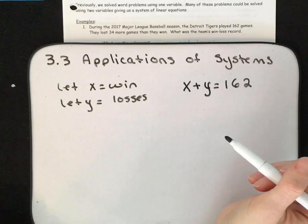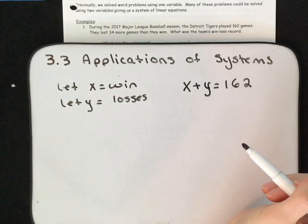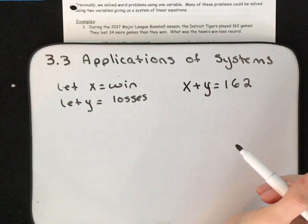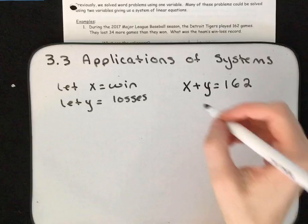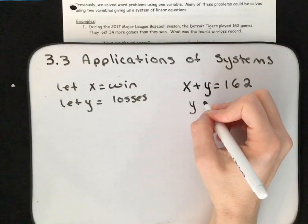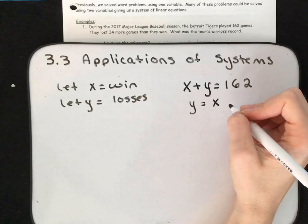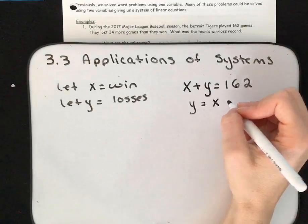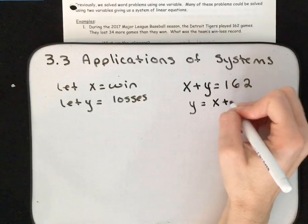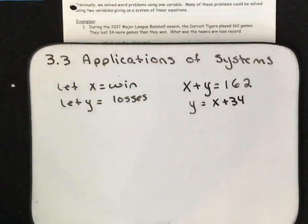They lost 34 more games than they won. If they lost 34 more games than they won, that means if we take the number of games that they lost and look at the number they won, they lost 34 more than they won. So the number they won plus 34 equals the number they lost: Y equals X plus 34. Now we can solve our system of equations.